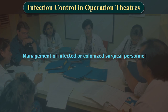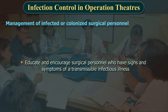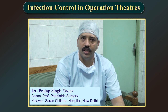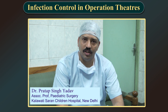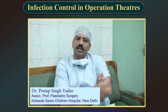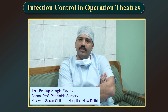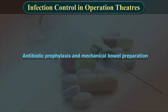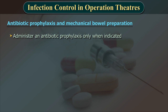Educate and encourage surgical personnel who have signs and symptoms of a transmissible infectious illness to report conditions promptly to their supervisory and occupational health service personnel. Training of hospital staff and repeated inculcation of proper cleanliness culture should be incorporated. If a patient has an active infection, training wounds, or infection, they should avoid coming to the OT and other critical areas, and appropriate measures should be taken.